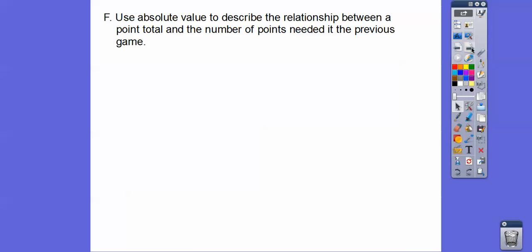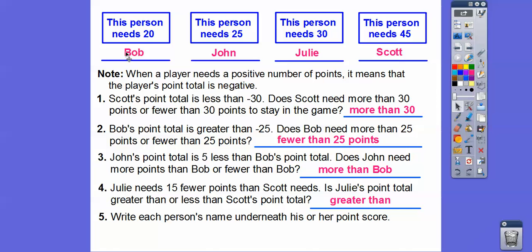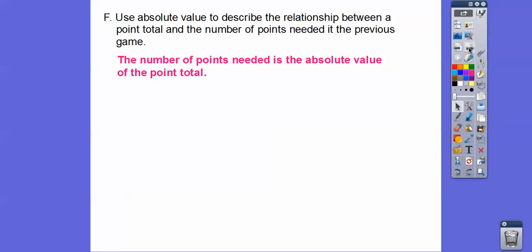We're going to use absolute value to describe the relationship between point total and the number of points needed. The number of points needed was the absolute value of the point total. For example, needing 20 points meant the player was negative 20 points below zero.